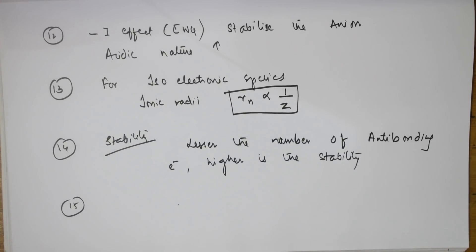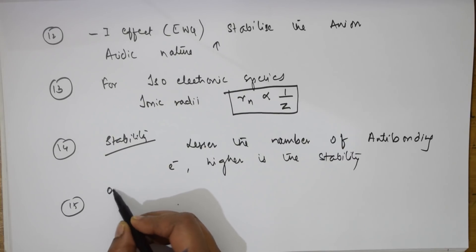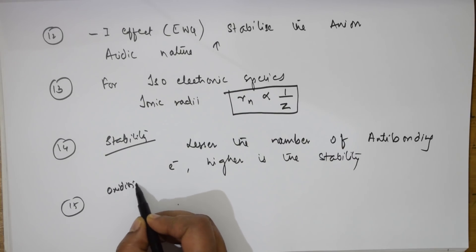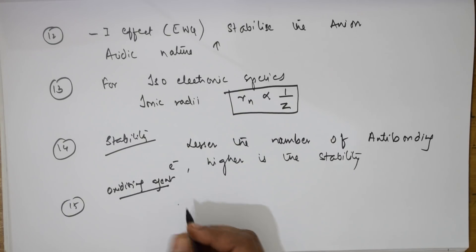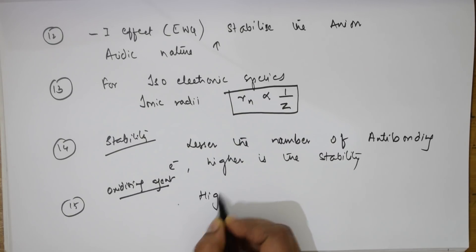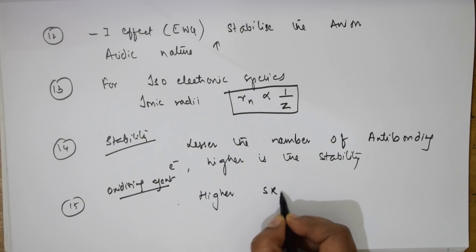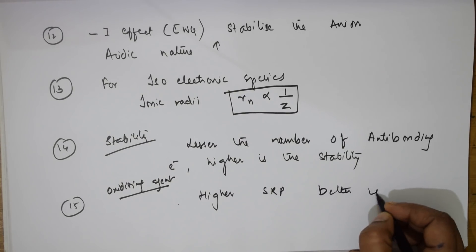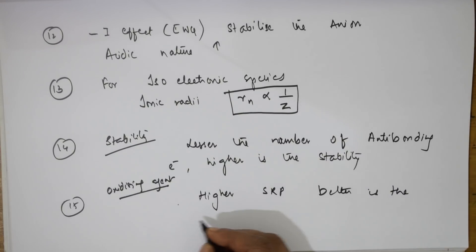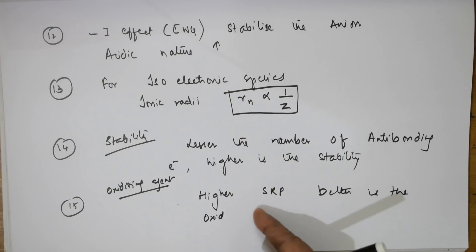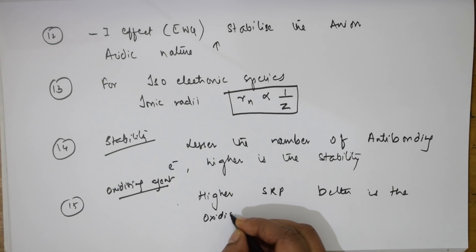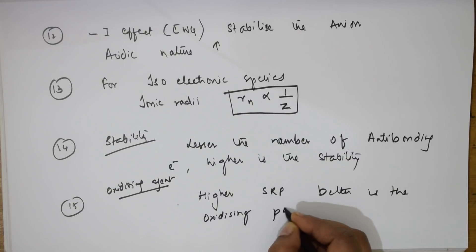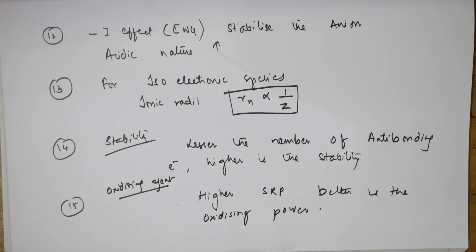The 15th concept, in terms of SRP for an oxidizing agent: higher the standard reduction potential (SRP), better is the oxidizing agent and greater is the oxidizing power.